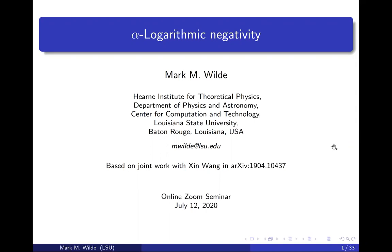What I'm going to present is joint work that I did last year with Xin Wang. At the time, he was a postdoc at University of Maryland; now he's working at Baidu Research in Beijing. The topic is this concept called alpha logarithmic negativity. If you've studied quantum information theory before, you might have heard of the logarithmic negativity entanglement measure. It's a very popular one because it's relatively easy to compute, and it's been used a lot by experimentalists when measuring entanglement. It's also easy to compute for bosonic Gaussian states — there's a simple formula that's a function of the covariance matrix.